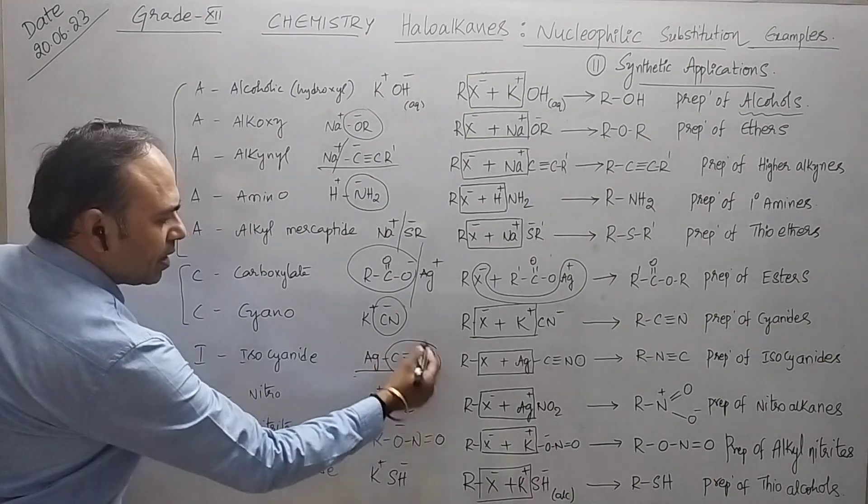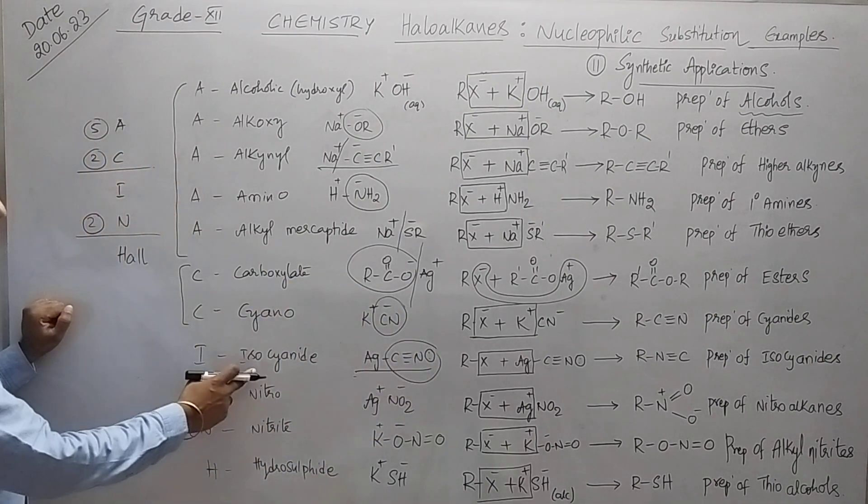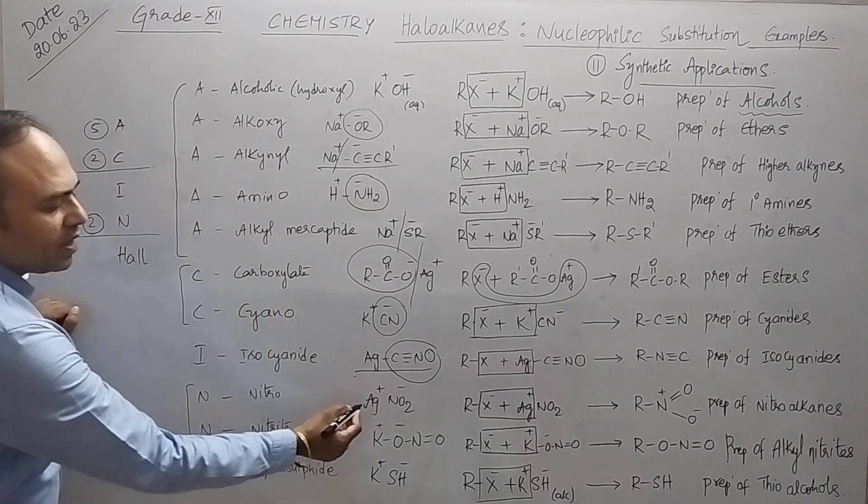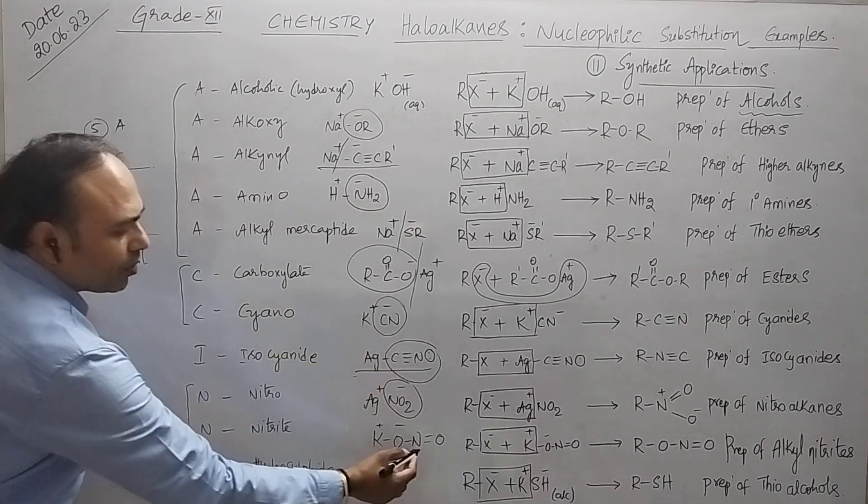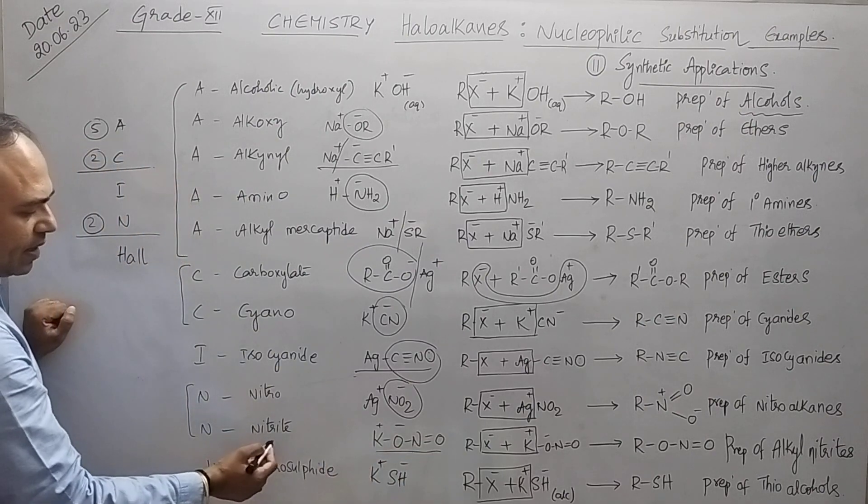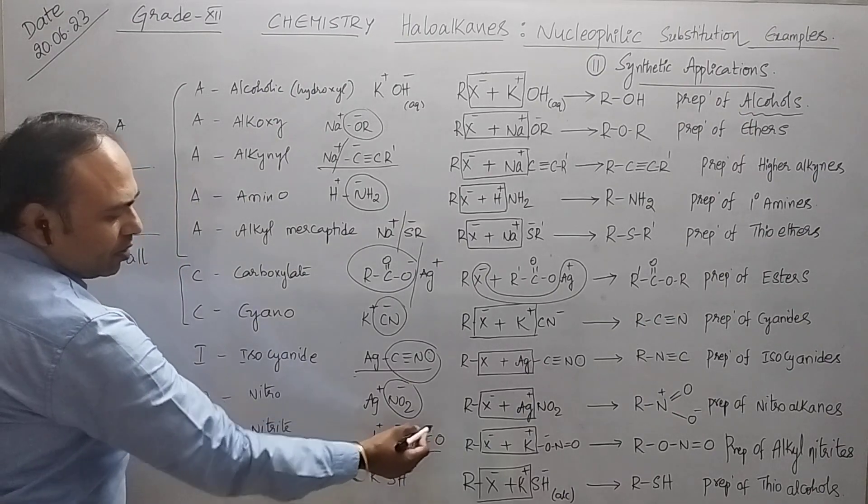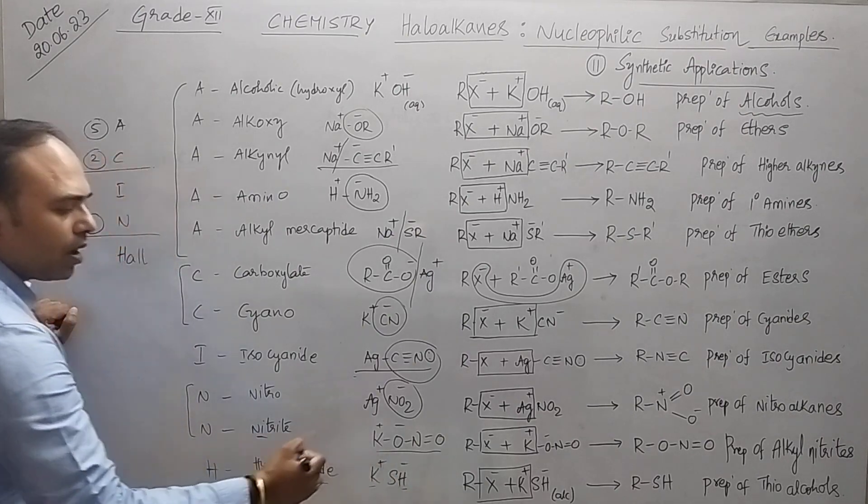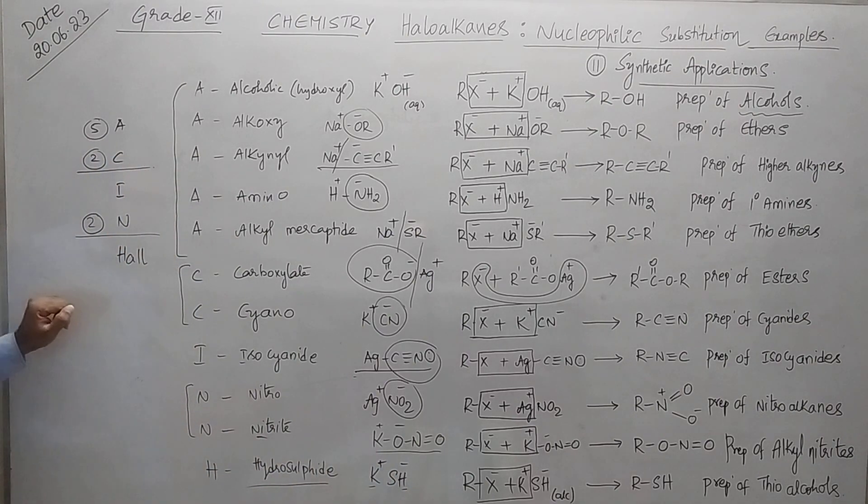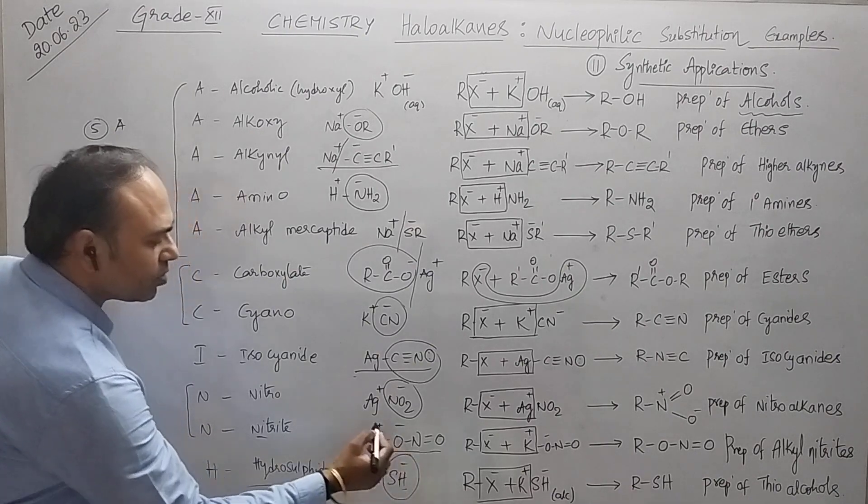After this, the covalent compound you know, silver cyanide. From this you have NC, so that will be isocyanide. After this, silver nitrite, we get NO2 minus. Next, potassium nitrite, we get nitrite group ONO.